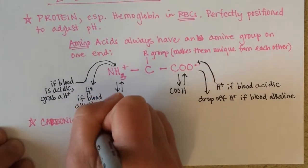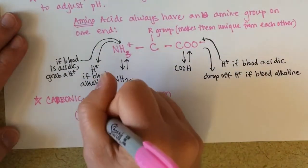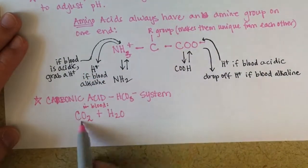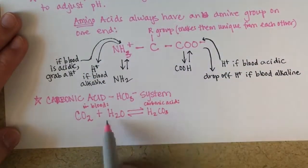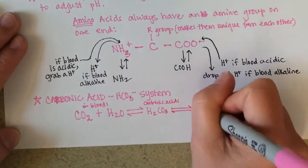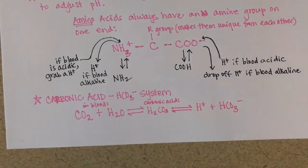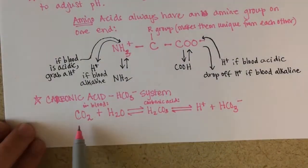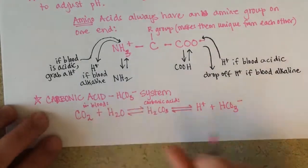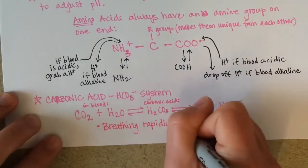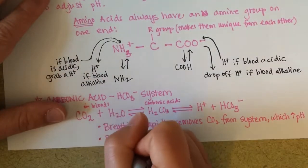One other buffer system is the carbonic acid bicarbonate system. In the blood, carbon dioxide will mix together with water and they will form a weak acid called carbonic acid. Because it is a weak acid, it can actually take another form. Breathing rapidly removes carbon dioxide from the system and that will raise blood pH. Breathing impaired retains carbon dioxide, which decreases pH.